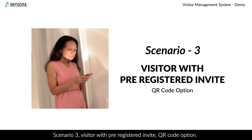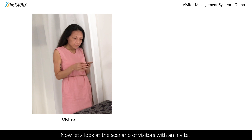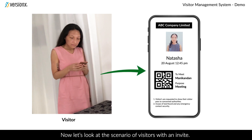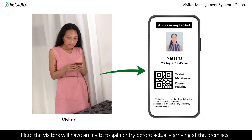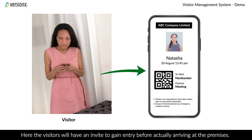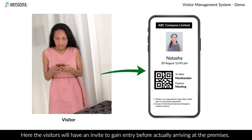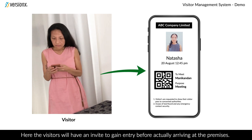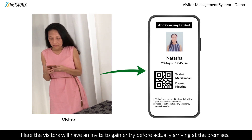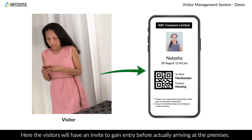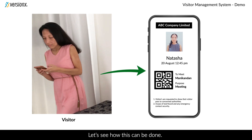Scenario 3: Visitor with pre-registered invite — QR code option. Now let's look at the scenario of visitors with an invite. Here the visitor will have the e-pass needed to gain entry before actually arriving at the premises. Let's see how this can be done.